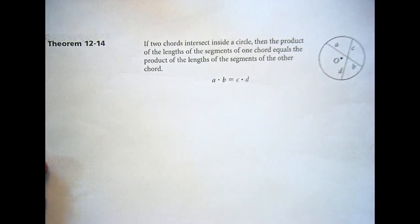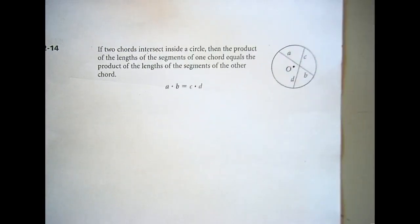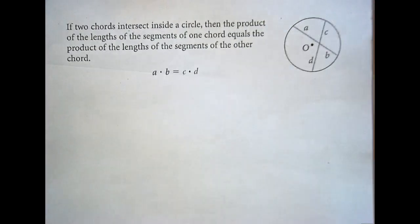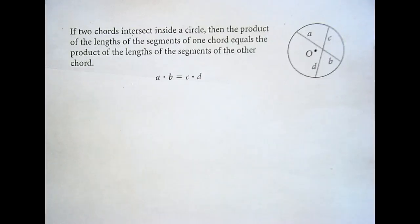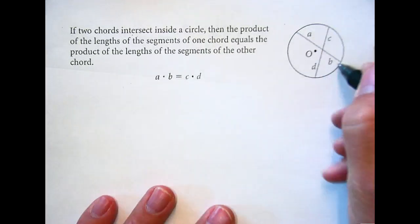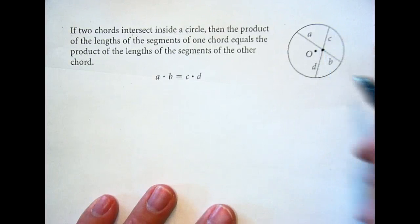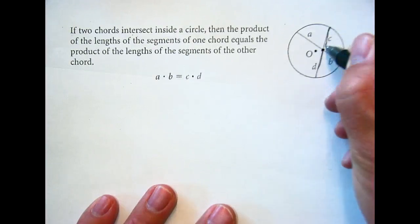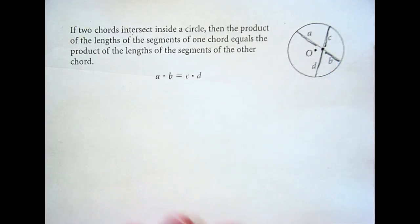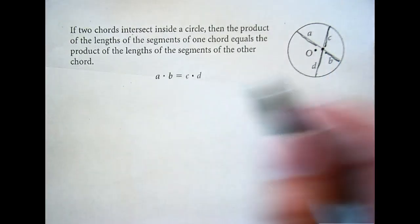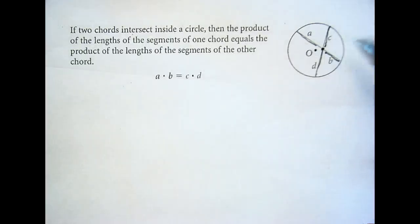Theorem 12-14: if two chords intersect inside a circle, then the product of the lengths of the segments of one chord equals the product of the lengths of the segments of the other chord. So if I have two chords that intersect — there's our point of intersection — this length times this length, so c times d, will equal a times b. That is pretty neat — ab equals cd, that's what it's saying.